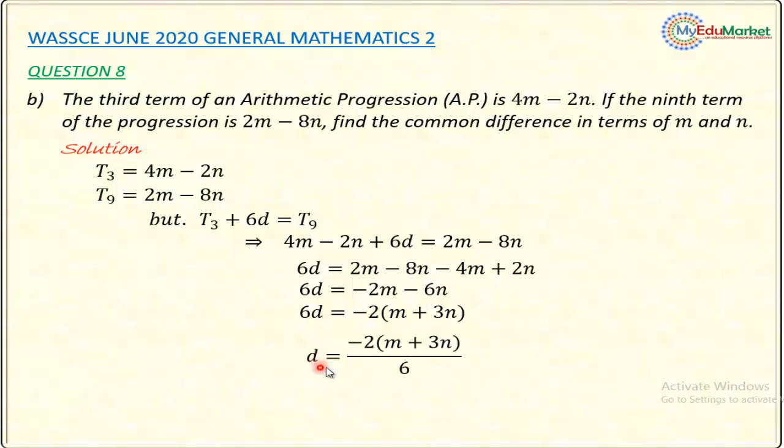So, I'll have D equals minus 2, bracket, M plus 3N. That is the right-hand side divided by 6. And 2 can go into 6 three times. So, I'm going to have minus bracket M plus 3N all over 3. This 2 into 6 is what gives this 3. And it is minus 2, so the minus remains.